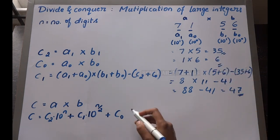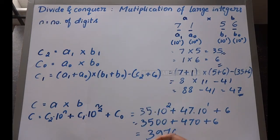Let's substitute these values in the final equation. I have substituted all values of c0, c1, and c2 in this equation. n is the number of digits, 2, so n/2 will be 1. Substituting all these three values, we can see that the final value, that is the product, is 3976. That is the correct product when we multiply 71 and 56.